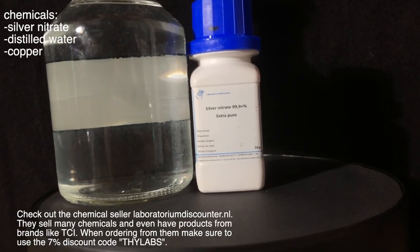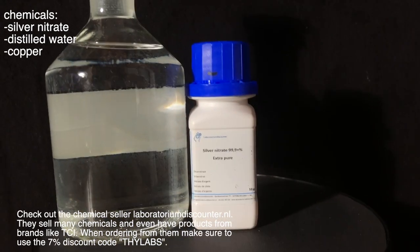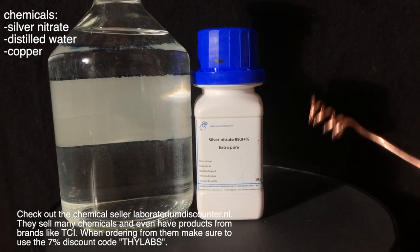Welcome everyone, today we are going to make a silver tree. For this you are going to need silver nitrate, distilled water and a coil of copper.